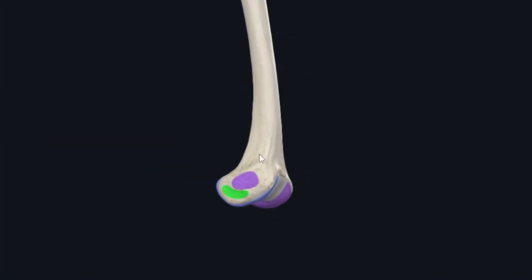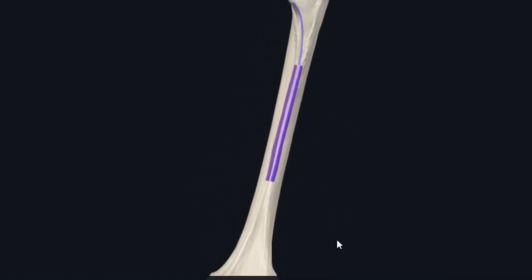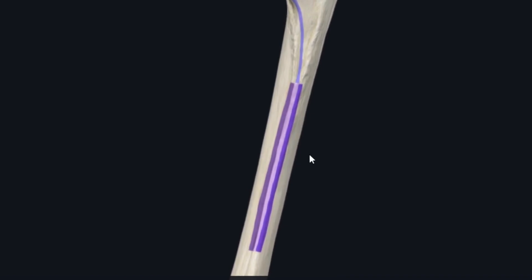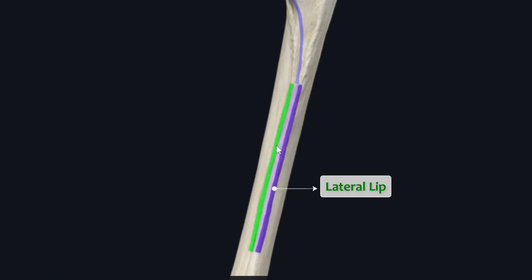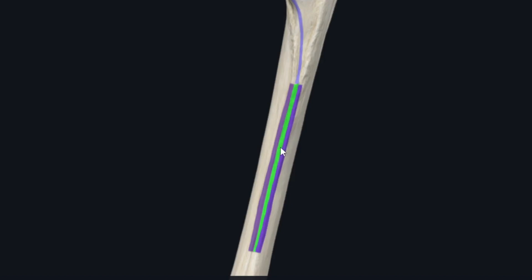Rotating to a posterior view, we revisit the linea aspera and its three zones: the lateral lip, the medial lip, and the intermediate zone between them — a narrow rough area. The linea aspera has been divided into these zones because they serve as attachment sites for different muscles of the lower limb, making it convenient to understand the muscle attachments.